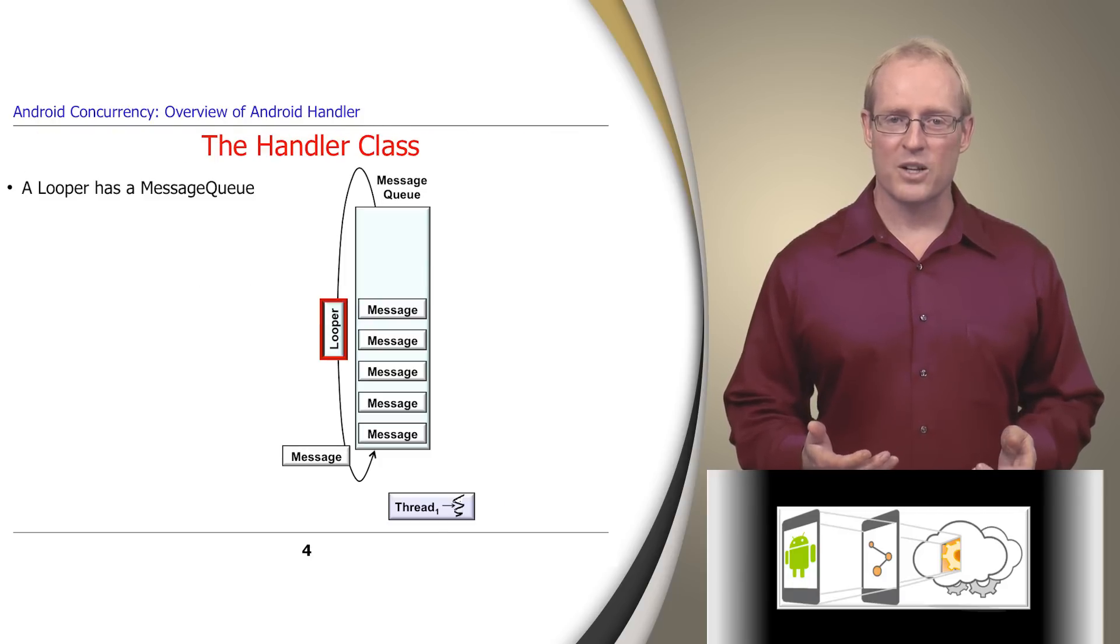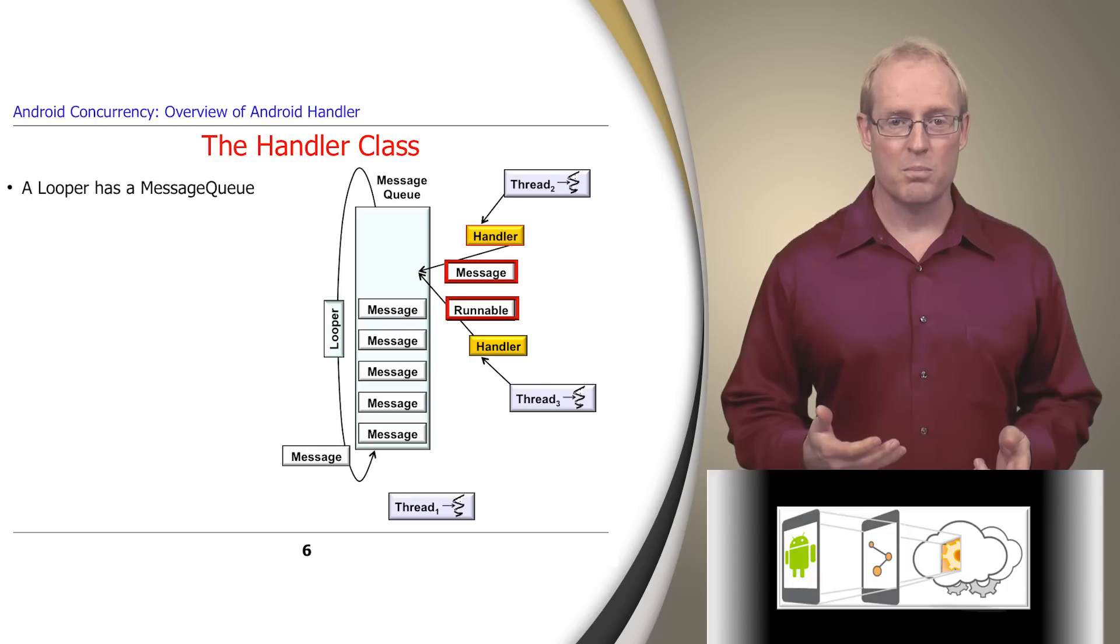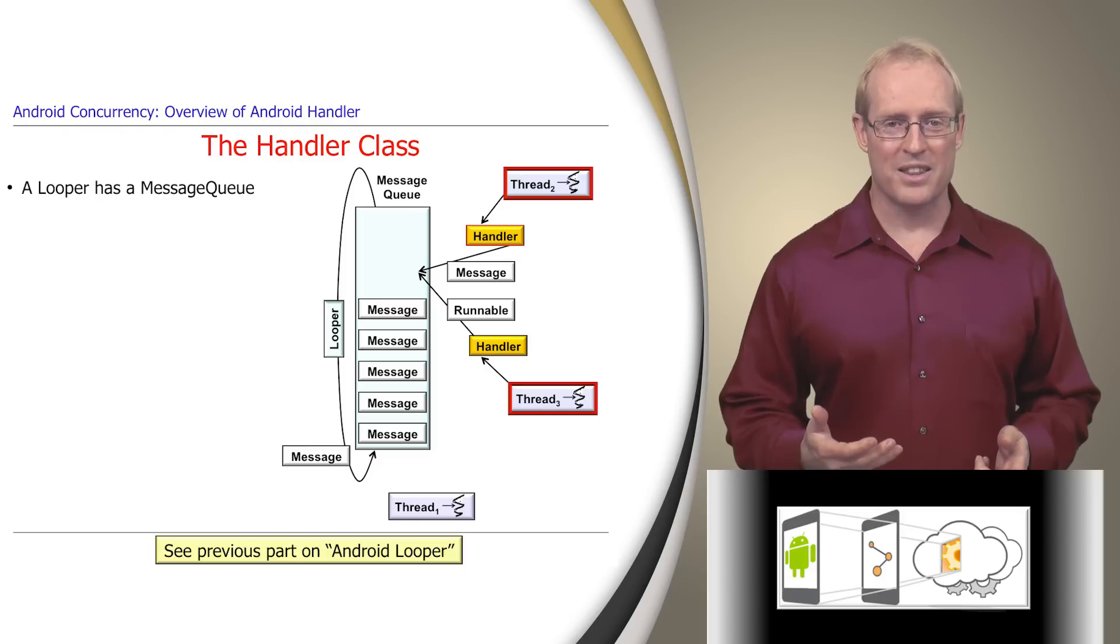Each thread-specific looper contains a synchronized message queue that's used to process messages and runnables placed on the queue by one or more threads, as described in the previous video.